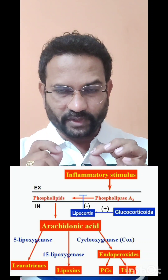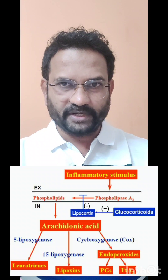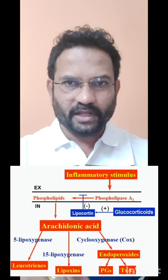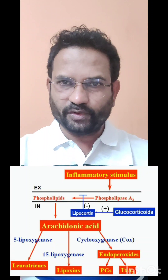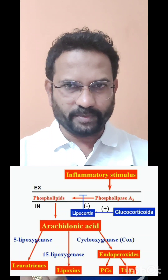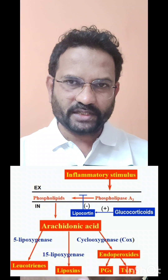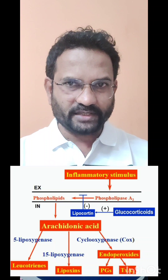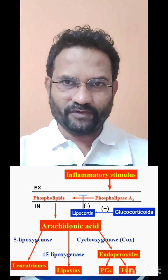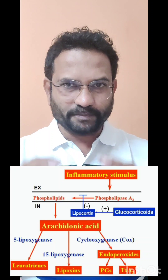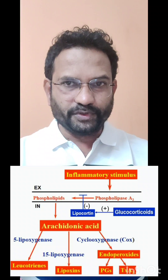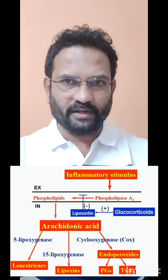If Phospholipase A2 is inhibited, arachidonic acid will not be produced. Therefore, prostaglandins and leukotrienes will not be produced either.